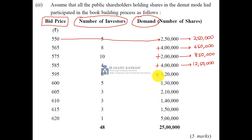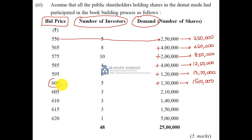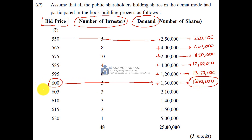At ₹595, the cumulative demand is 13,70,000 shares. Then at ₹600, the cumulative demand reaches 15,00,000 shares — exactly the required 15 lakh. So the delisting price is ₹600. Therefore, ₹600 is your final offer price.